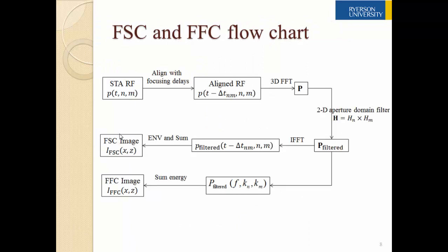The processes of FSC and FFC can be summarized in this flow chart. First, the STA RF signal is aligned with focusing delay. Then we perform a 3D Fourier transform to get a spectrum. This spectrum is filtered by the 2D aperture domain filter along both transmit and receive domains. The filtered spectrum undergoes an inverse Fourier transform and then compounding to provide an image value in the FSC image. For FFC, the energy of the spectrum is summed along transmit and receive.